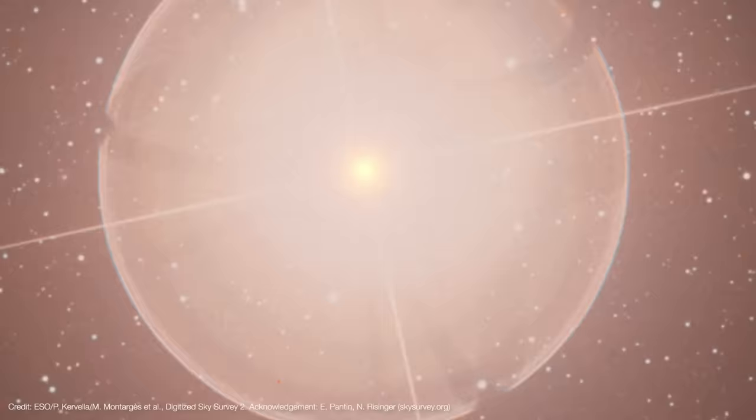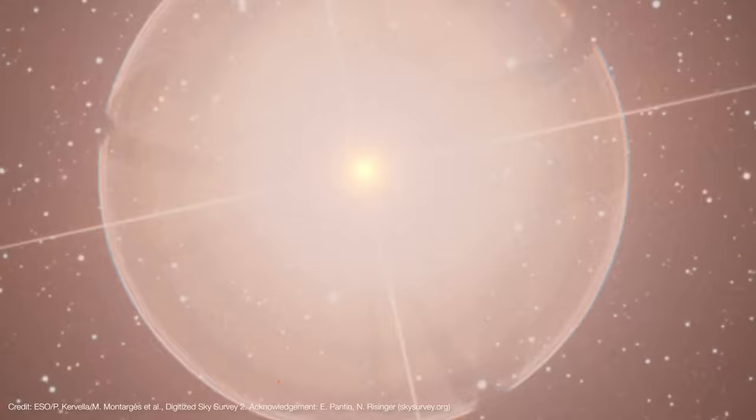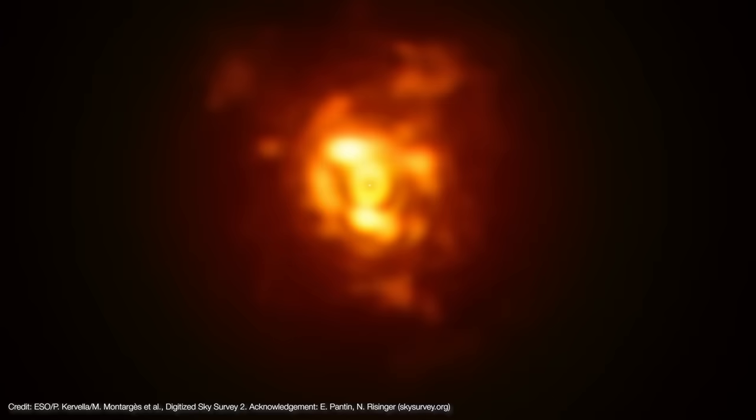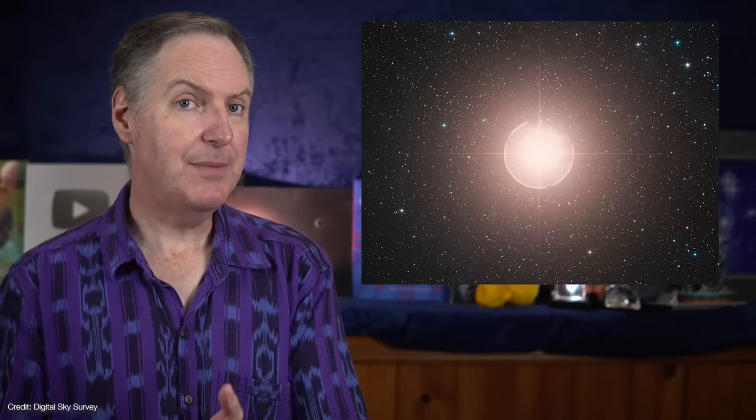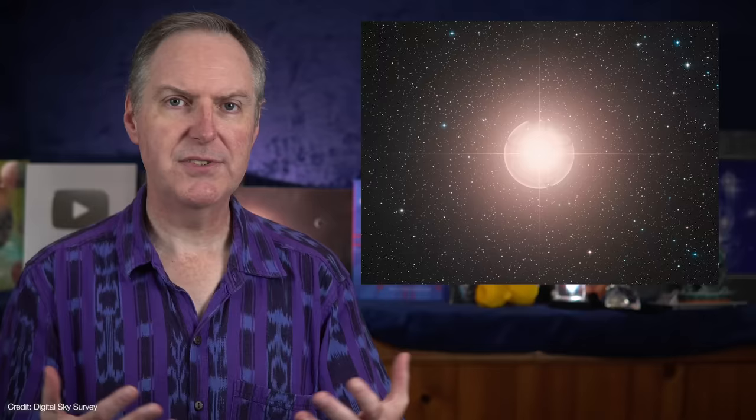Not only that, but Betelgeuse has shed anywhere from 8 to 10 solar masses worth of material as it pulsates. Most of that ejected mass has cooled into a giant cloud of dust surrounding the star. All of these problems make it very hard to determine things like Betelgeuse's diameter, its distance, and even whether any given dip in its brightness is really due to the star pulsating, or if maybe there's a cloud of foreground dust or a sunspot that's forming.